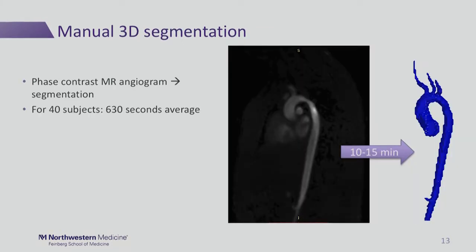For 3D segmentation, we calculate a 3D MR phase contrast angiogram, which is a weighted combination of the magnitude and velocity data. We use this to manually segment, starting with a threshold and then manually correcting from there. Over 40 subjects, it takes around 10 minutes and 30 seconds to do each segmentation.